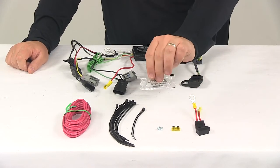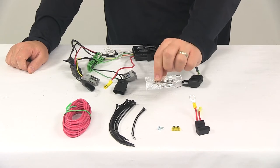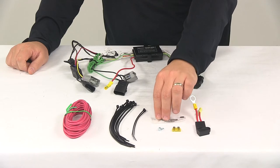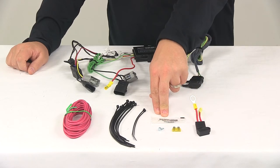We also want to recommend that you use a small amount of terminal grease in all your electrical connections. Like the plugs on the vehicle and the four-pole connector itself, that's going to help prevent corrosion to the terminals. And the packet is included.